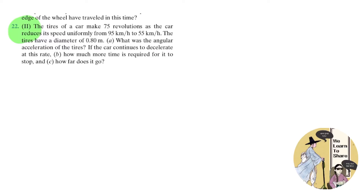Hey guys, this is Aina from WeLearn2Share. In this video, we're going to cover this question from physics in chapter 8, rotational motion. The tire of a car makes 75 revolutions as the car reduces its speed uniformly from 95 kmph to 55 kmph.